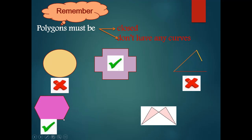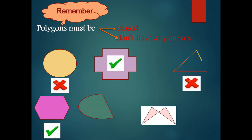Yes, teacher. Why? It's closed, formed from three line segments or more, and doesn't have any curve. Okay. Another one — is this a polygon? No, teacher. Why? Because here this is a curve — I can see a curve here.